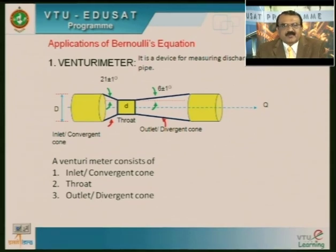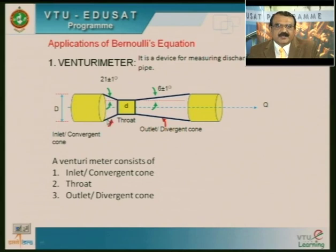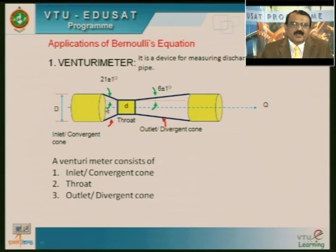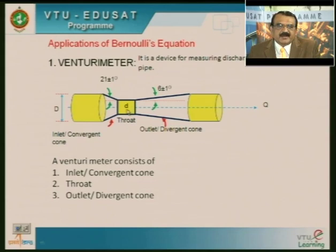Let us start with the Venturimeter. It is a device used to measure the discharge in a pipe. Venturimeter consists of three parts: one is the inlet or convergent cone, the middle section is called the throat, and the end section is the outlet or divergent cone. The inlet makes an angle of 21 ± 1 degree and the outlet makes an angle of 6 ± 1 degree. The inlet diameter of the Venturimeter is the same as the pipe diameter, and at the throat, the diameter is usually half the pipe diameter.